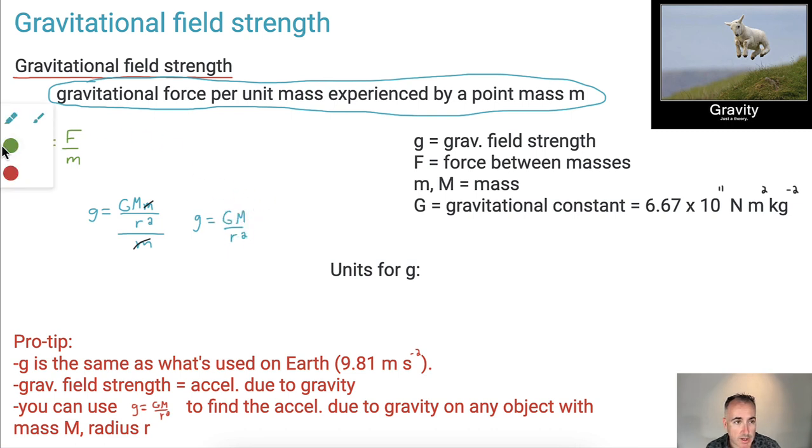So that's the reason why in your data booklet there's an extra equation that goes like this. They put the g like this, and they put the M here, and the r squared like this. So this is why we have this equation as well.